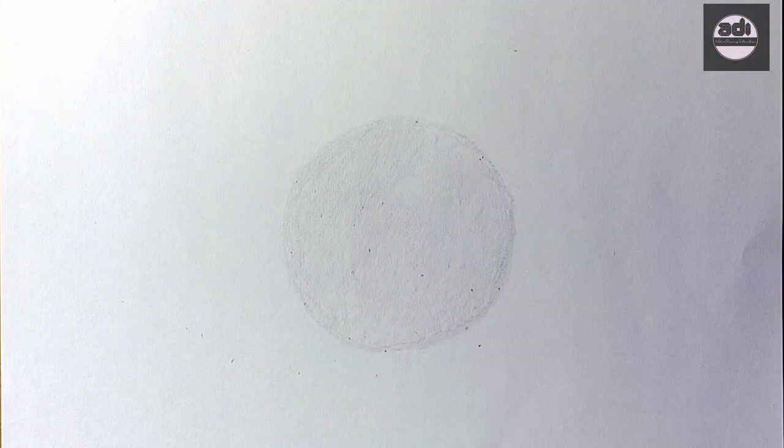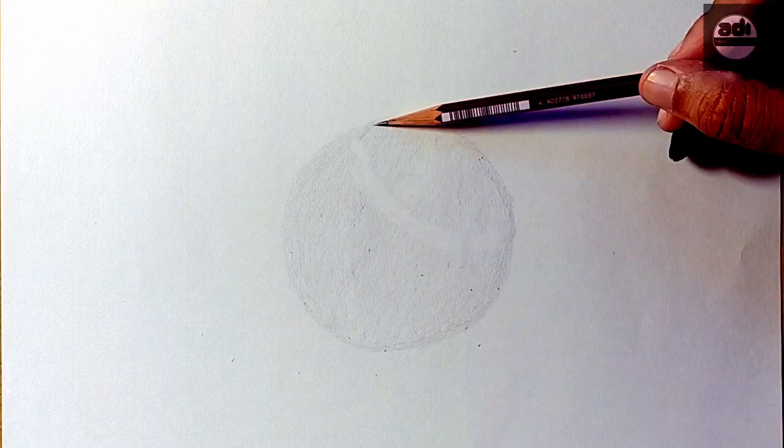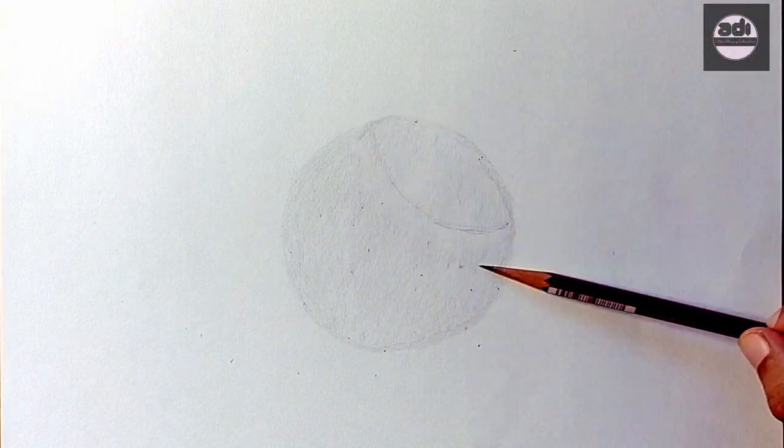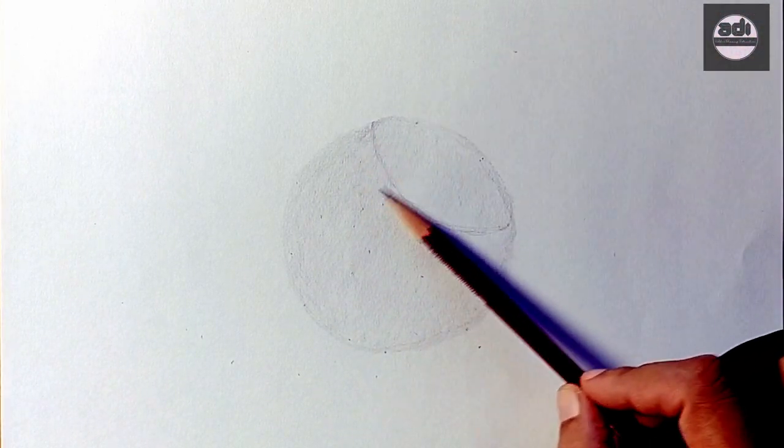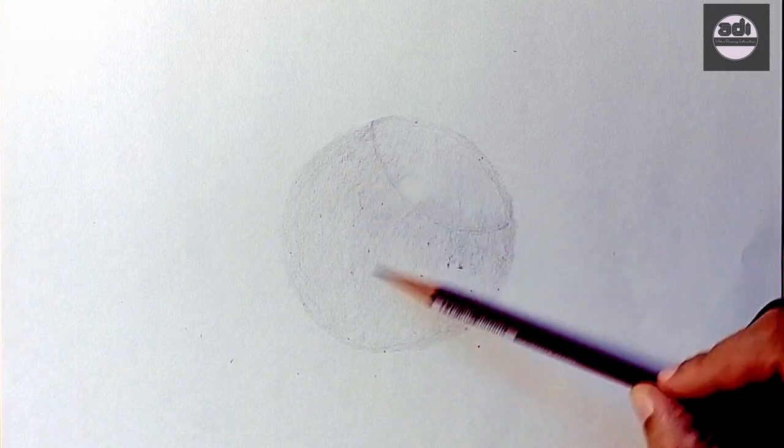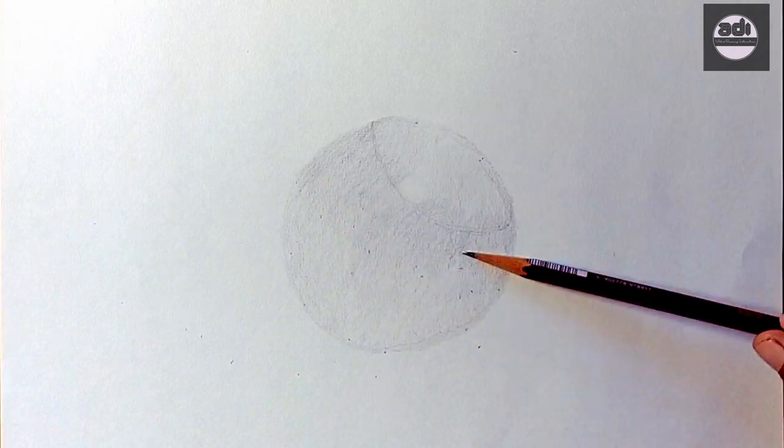You will then mark the center light area by putting a ring around it with the 2H pencil. Then you will put in the light form light, mid tones, and dark form light using the 2H and HB pencils respectively. The change in tonal value is subtle.